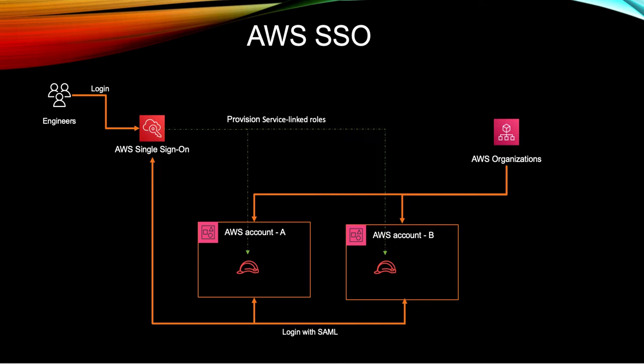But now you can also use an external identity provider. Suppose you have an organization that is already using Azure Active Directory where your users, groups, and everything is stored, and you don't want to maintain a separate list in AWS SSO — you want to integrate that Active Directory with your SSO. That is now possible, and in this video I'm going to show you how.